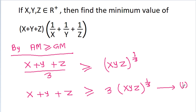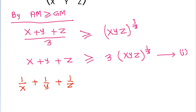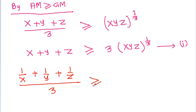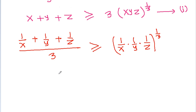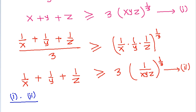Also, (1/x + 1/y + 1/z)/3 is greater than or equal to (1/(xyz))^(1/3), and therefore 1/x + 1/y + 1/z is greater than or equal to 3·(1/(xyz))^(1/3). Suppose this is equation 2.